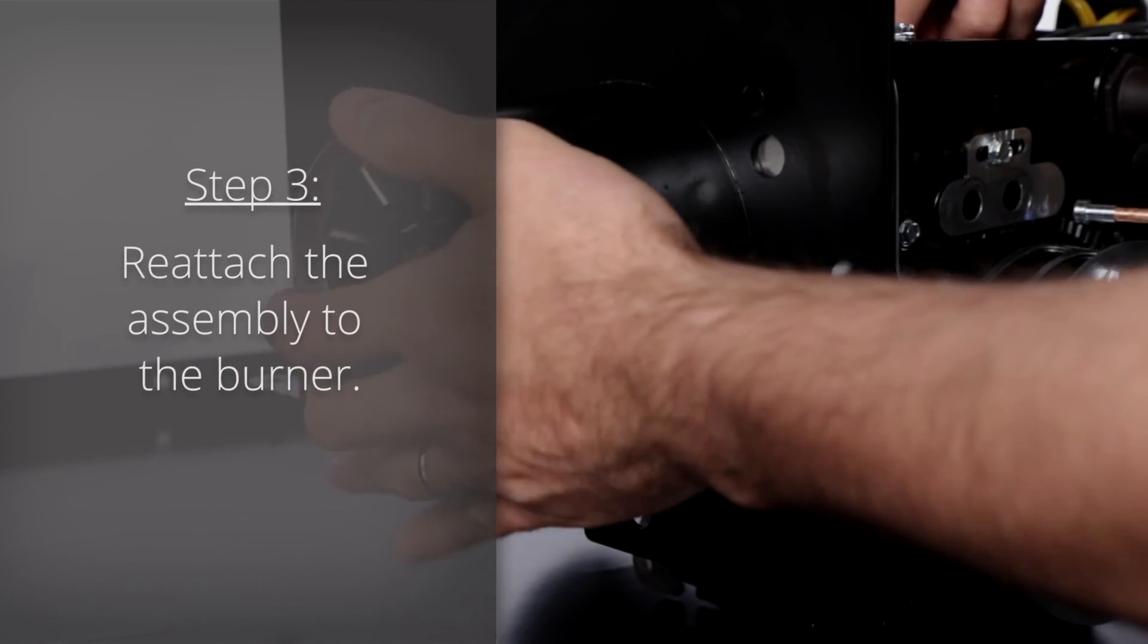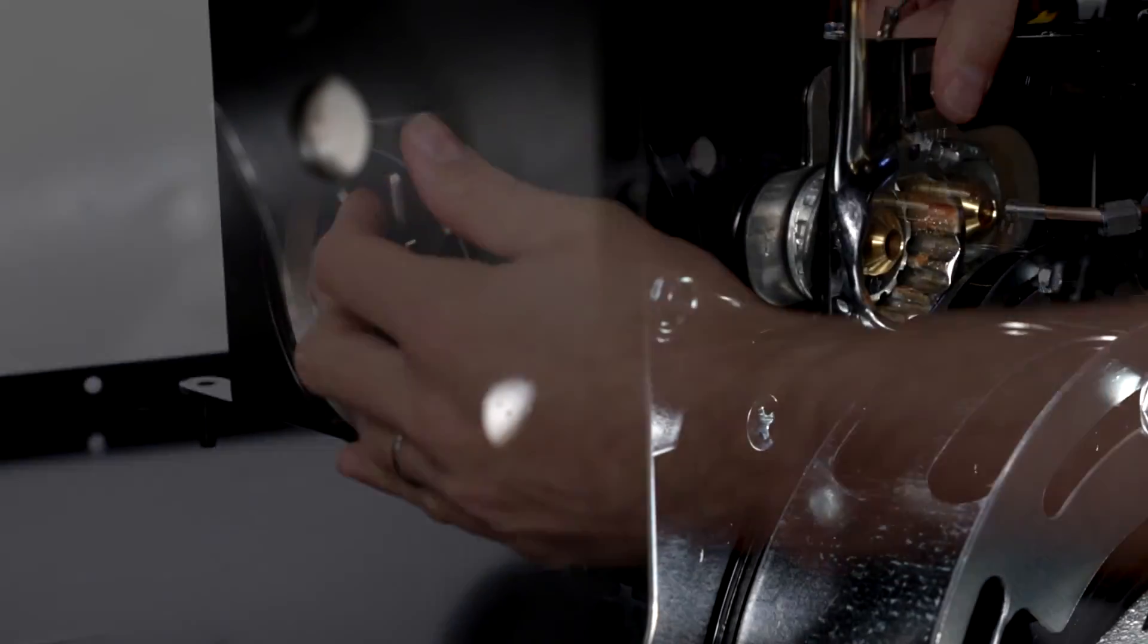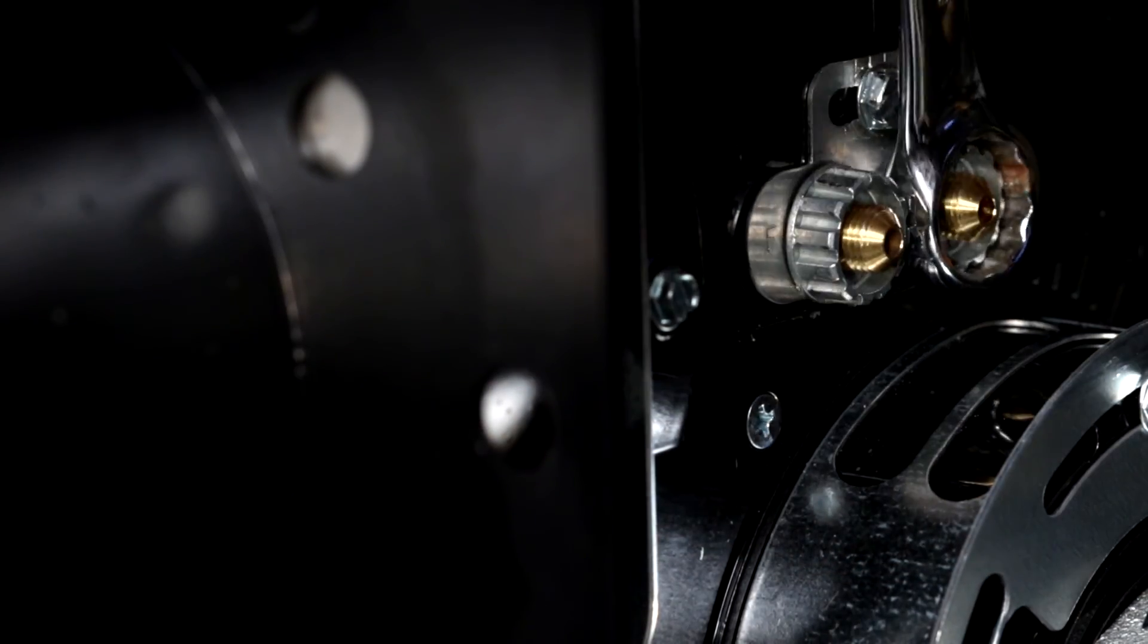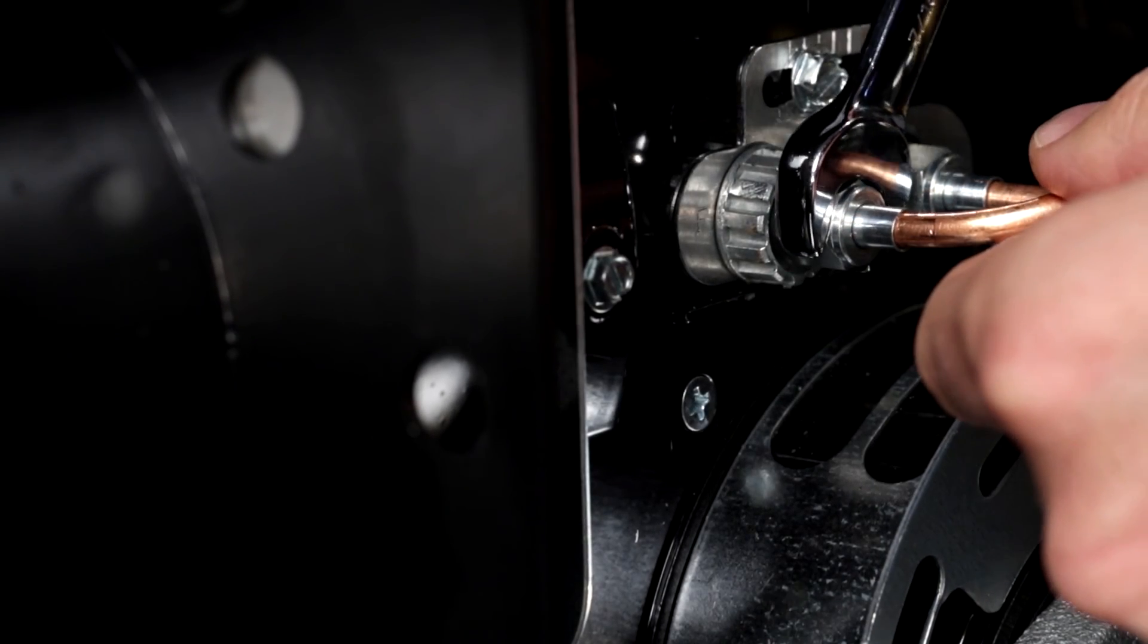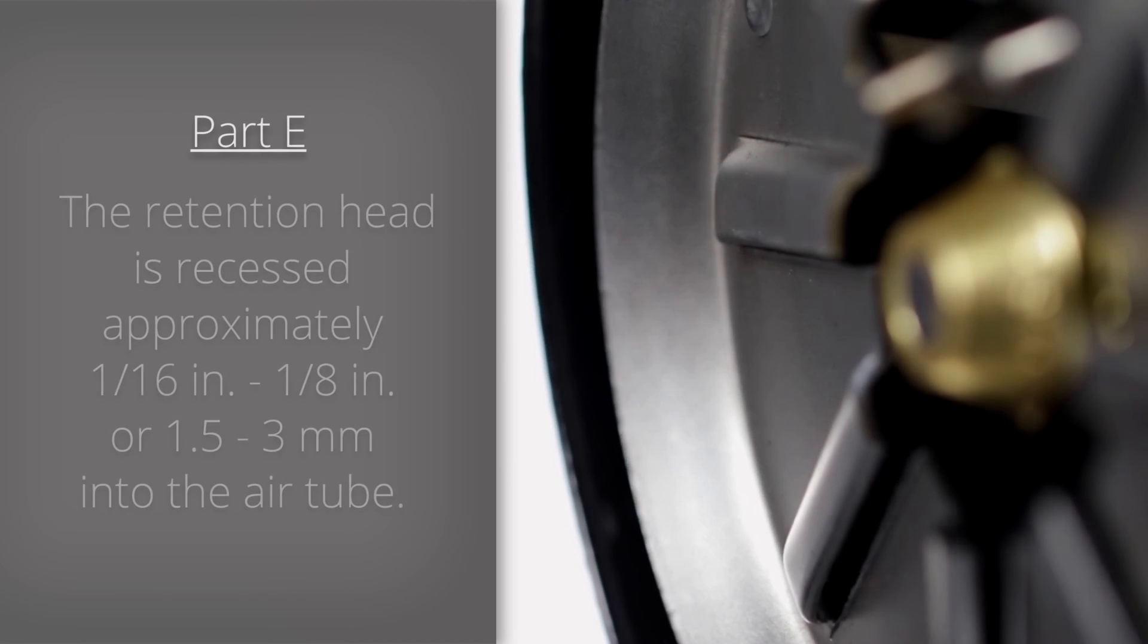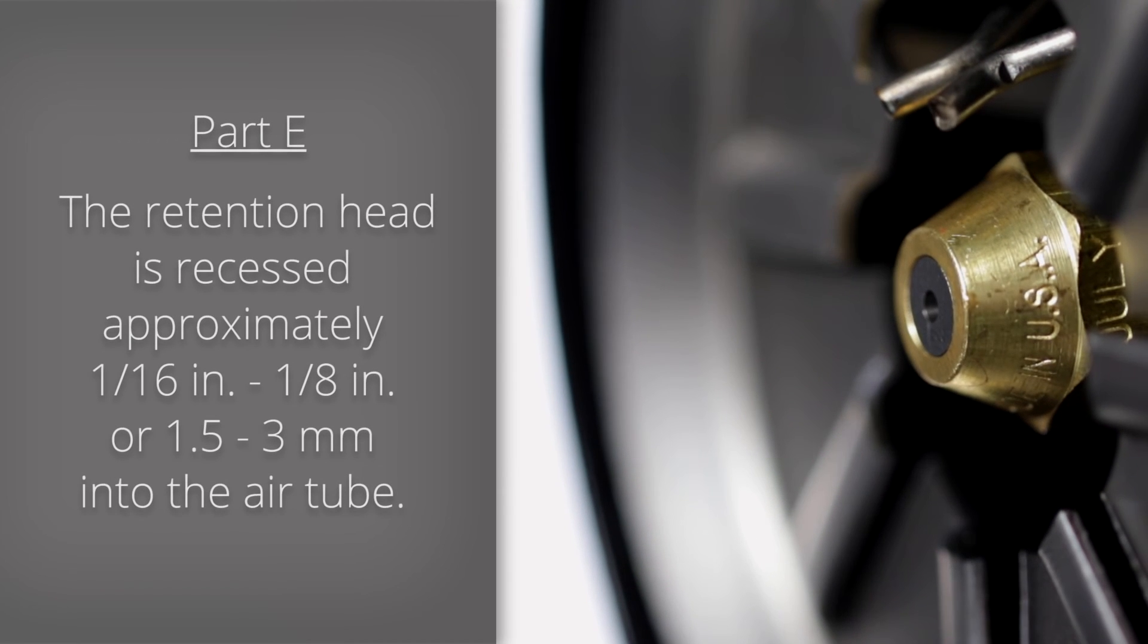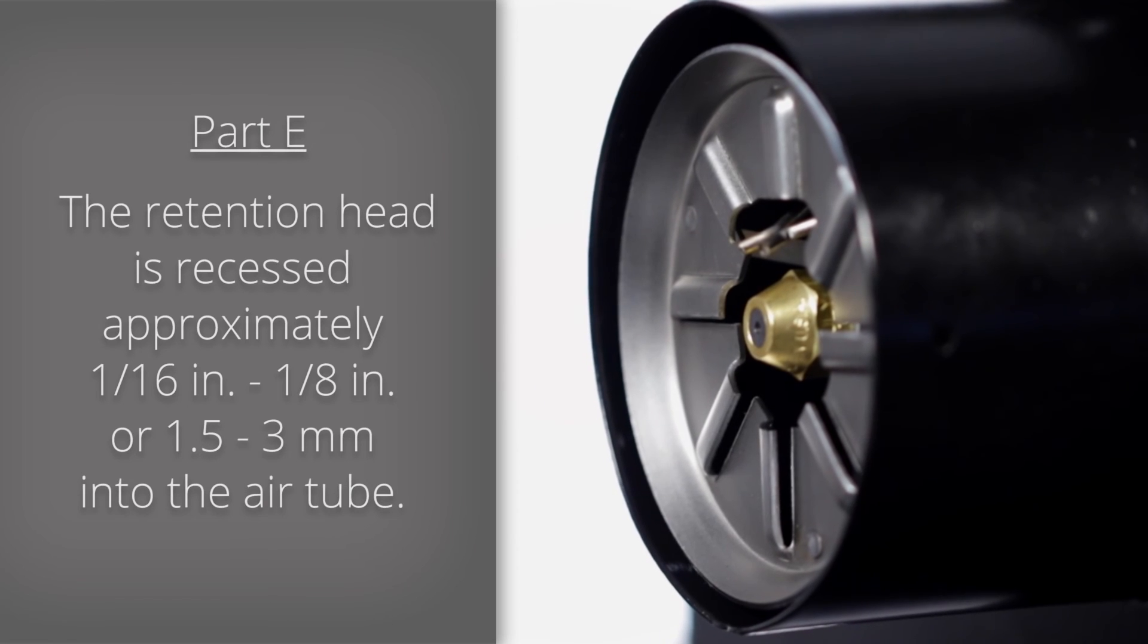Step 3: Reattach the assembly to the burner. Part E: The retention head is recessed approximately 1/16th to 1/8th of an inch or 1.5 to 3 mm into the air tube.